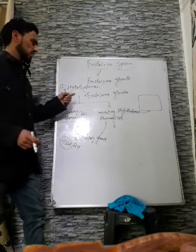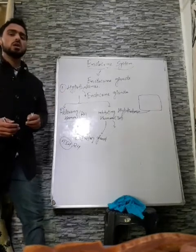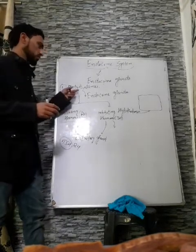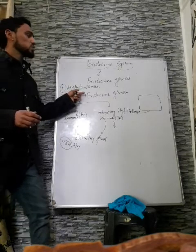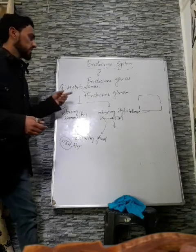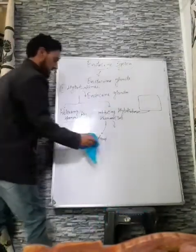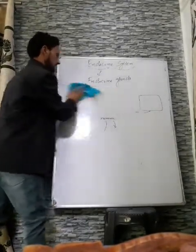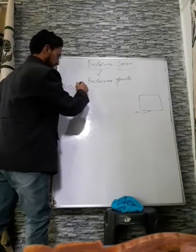Besides releasing and inhibiting hormones, neurons present in the hypothalamus also produce two types of hormones: oxytocin and vasopressin — also known as antidiuretic hormone (ADH). These two are known as neurohormones and are produced by the hypothalamus but stored in the pituitary gland, which we will study in more detail when covering the pituitary gland.